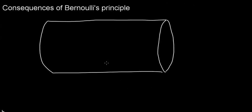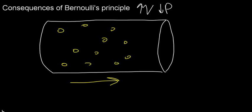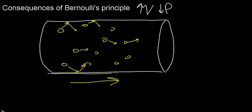Let's get started. Bernoulli's Principle states that an increase in the velocity of fluid is associated with a decrease in pressure. If I have particles of fluid all around this tube, they're all flowing in the same direction. Particles close to the edge of the tube are going to interact with the wall, and that's going to slow them down. Fluids flowing closer to the center of the tube are going to be less interrupted.